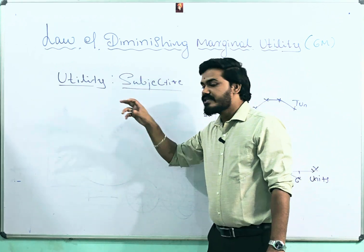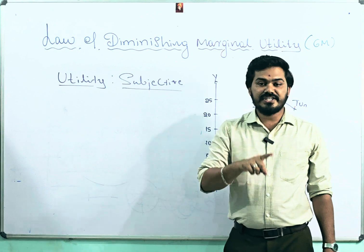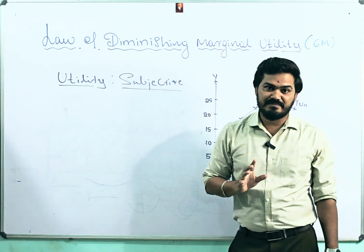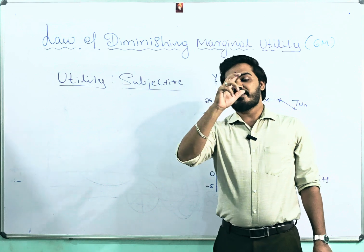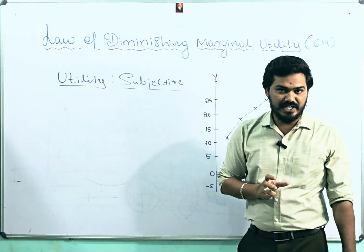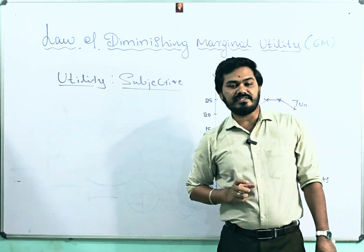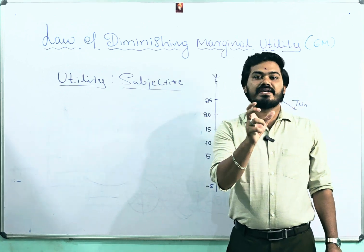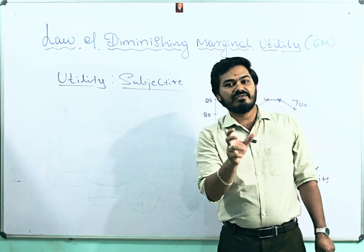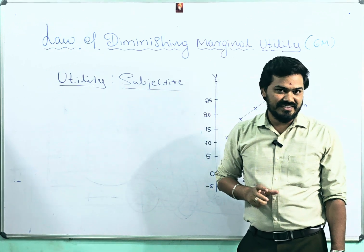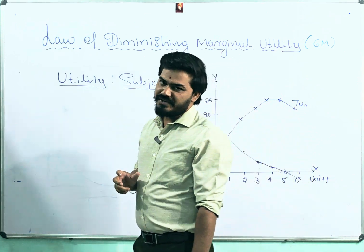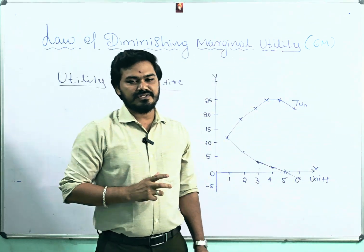Utility is considered subjective because it changes person to person, place to place, and time to time. As a small example: a cup of tea will give more pleasure in the morning session, while the same cup of tea will give lesser utility in the afternoon session — that is what is meant by subjective. In consumer behavior, we have two approaches: one is cardinal utility analysis and another is ordinal utility analysis.